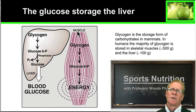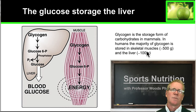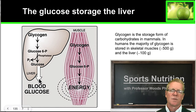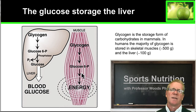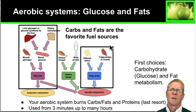Glucose is stored in two places: the liver and the muscles, as a polymer of glucose molecules called glycogen. There is about 500 grams of glycogen in the muscles and about 100 grams in the liver. This can be broken down to produce glucose very rapidly — liver glycogen enters the bloodstream to supply muscles, while muscle glycogen is broken down into glucose-6-phosphate to provide energy directly in the muscles. It's really important to keep your glycogen levels topped up through sufficient carbohydrate in your diet.